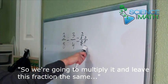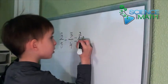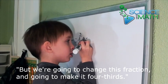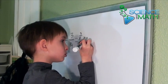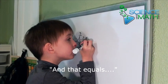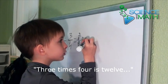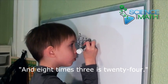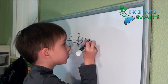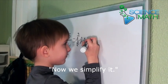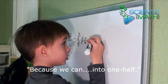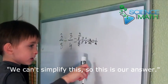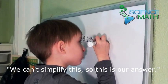So we're going to multiply it. We're going to leave this fraction the same, but we're going to change this fraction — we're going to make it 4/3. So that equals 12. 8 times 3 is 24. So we're going to simplify it. This will reduce to 1/2. We can't simplify this further, so this is our answer.